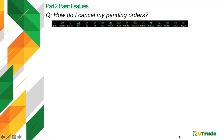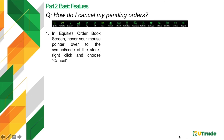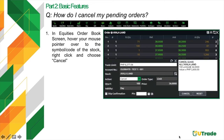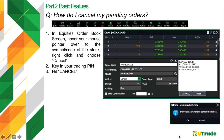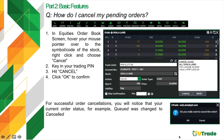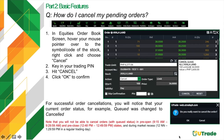The process of cancelling your order is similar to revising. In the Equities Order Book screen, hover over the stock's symbol or code, right-click, and choose Cancel. Type your trading PIN, hit the Cancel button, and click OK to confirm. For successful cancellations, the order status will be updated to Cancelled. Note that you cannot cancel orders with queued status in the last 15 minutes of the pre-open state and the last 2 minutes of the pre-closed state.